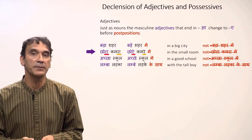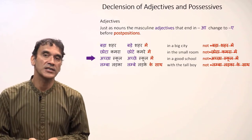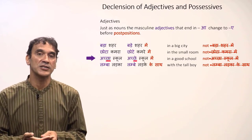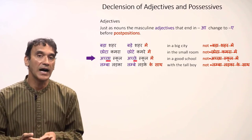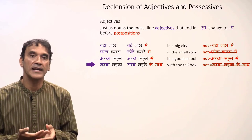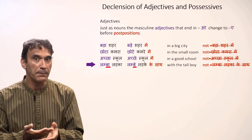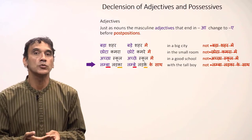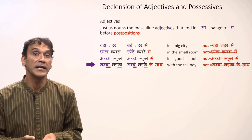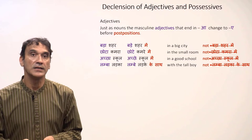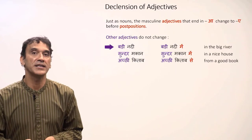It will never be 'chota kamra mein.' Next: 'achha school' (a good school) becomes 'achhe school mein' (in a good school) with the postposition — not 'achha school mein.' The last example: 'lamba ladka' (a tall boy) becomes 'lambay ladke ke saath' (with a tall boy). Again, both the noun and adjective end in 'ā,' so both change to 'e.' It will not be 'lamba ladka ke saath.' Just remember: only 'ā' changes to 'e'; other endings do not change.